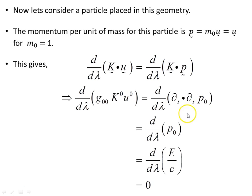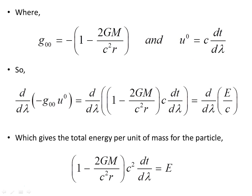On the right-hand side, p subscript 0 is the energy — the time component, the 0-component — and the derivative of that is zero. The 0,0 component of the metric tensor for the Schwarzschild geometry is this object, and the tangent vector in the time direction, u⁰, is c times dt/dλ.